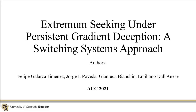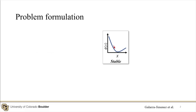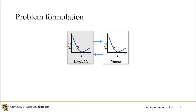In this video, I want to present a summary of our work: Extremum Seeking Under Persistent Gradient Deception - A Switching Systems Approach. Our main goal is to minimize the static cost function phi, which we assume to be strongly convex and twice differentiable. We consider three optimization algorithms in a scenario where there is an attack to the controller redirecting the system away from the optimal point. This can be modeled as a switched system between the nominal system and the under-attack one.